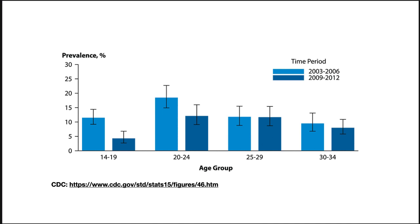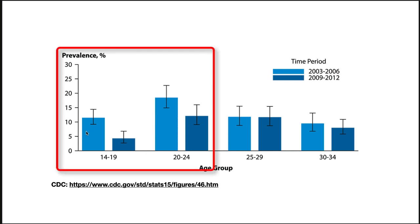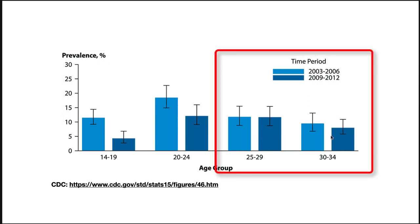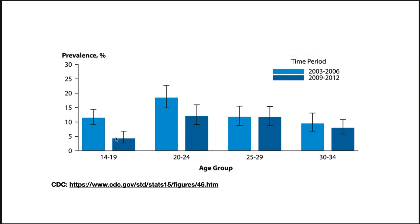A vaccine was developed against HPV, and the CDC began recommending the HPV vaccine for young women in 2006; it has since been expanded to young men. This graph shows the important effect it has been having on the decrease in incidence of the disease. Note the significant decrease in incidence in 14- to 19-year-olds and the 20- to 24-year-old group, comparing 2003–2006 to 2009–2012 when the vaccine was being recommended. These older age groups did not have access to the HPV vaccine. The vaccine is effective, and it's absolutely worth doing.